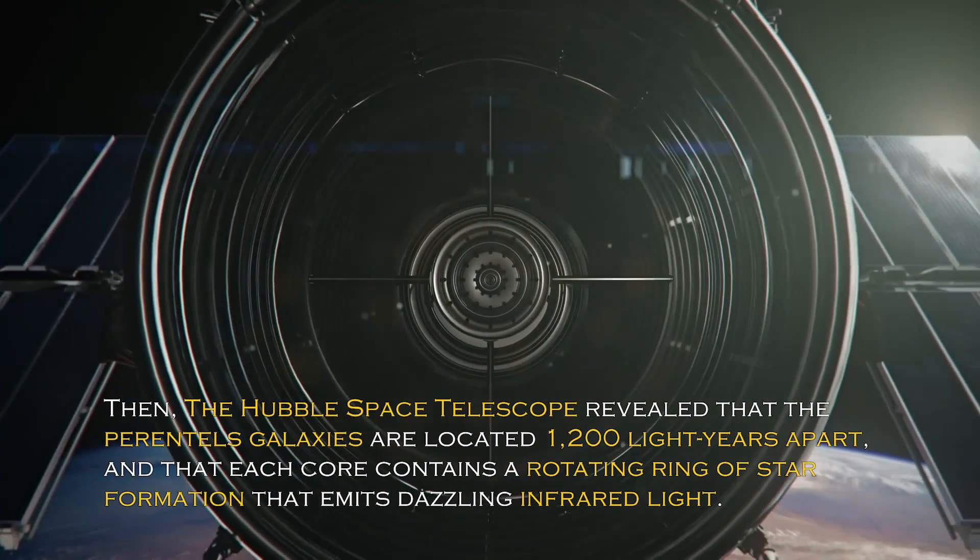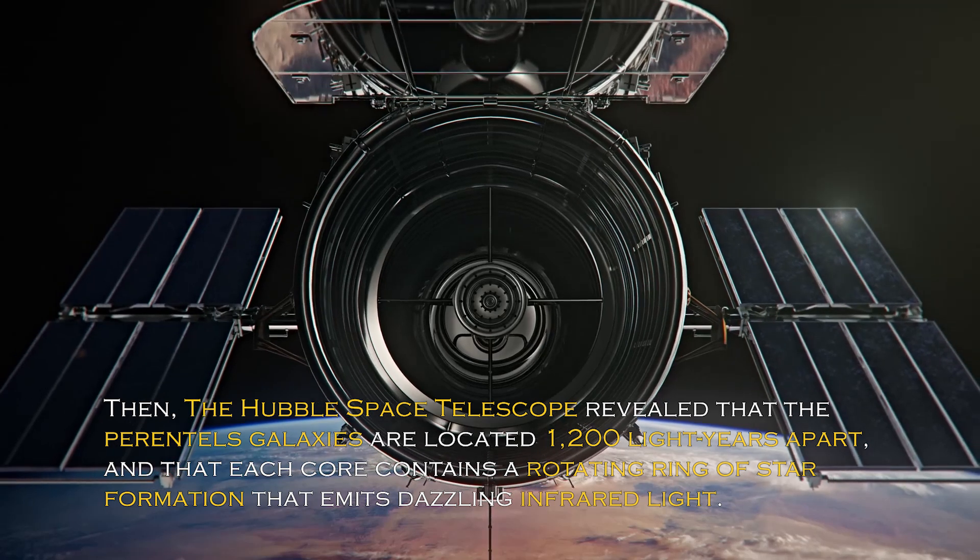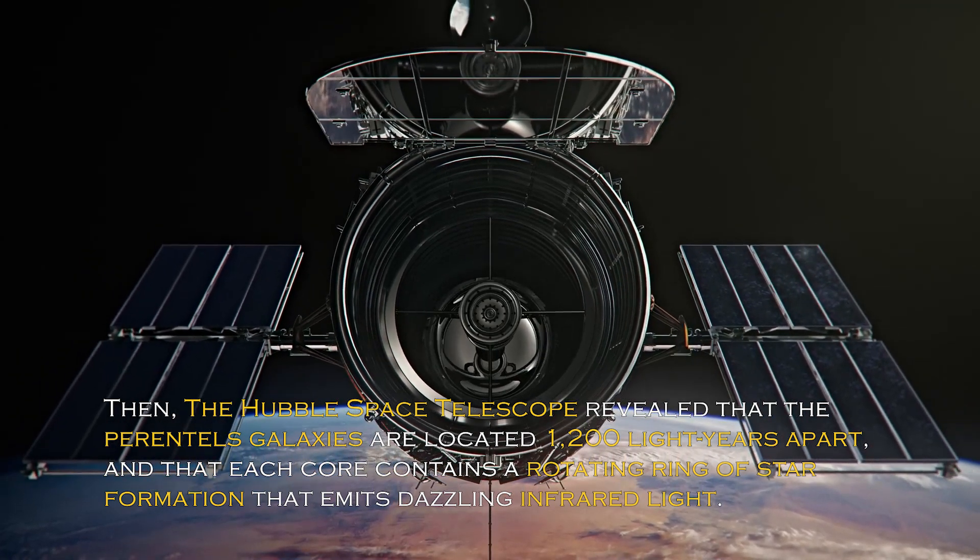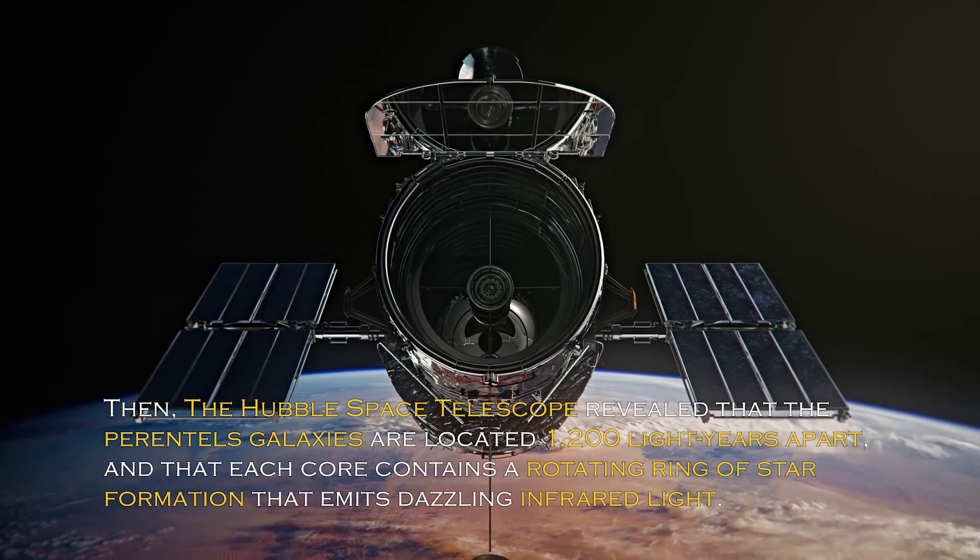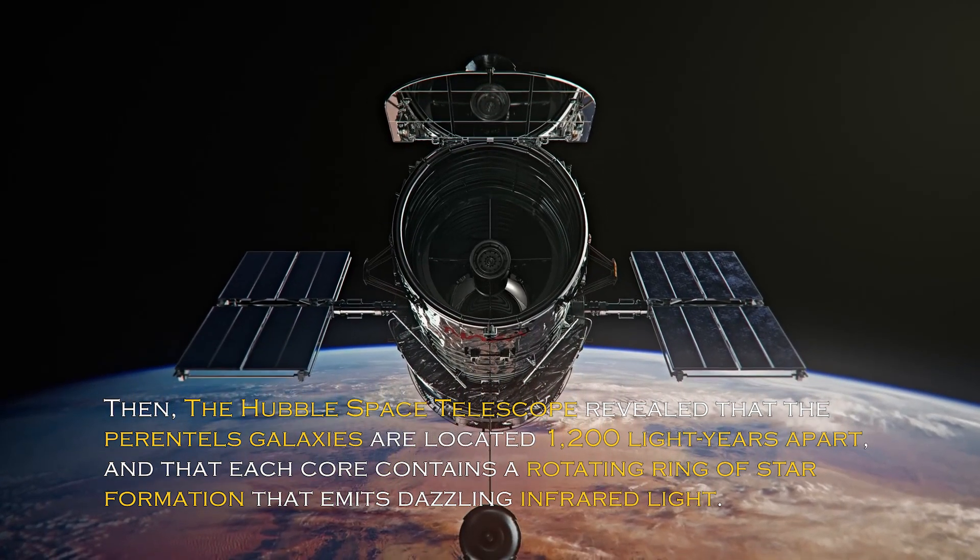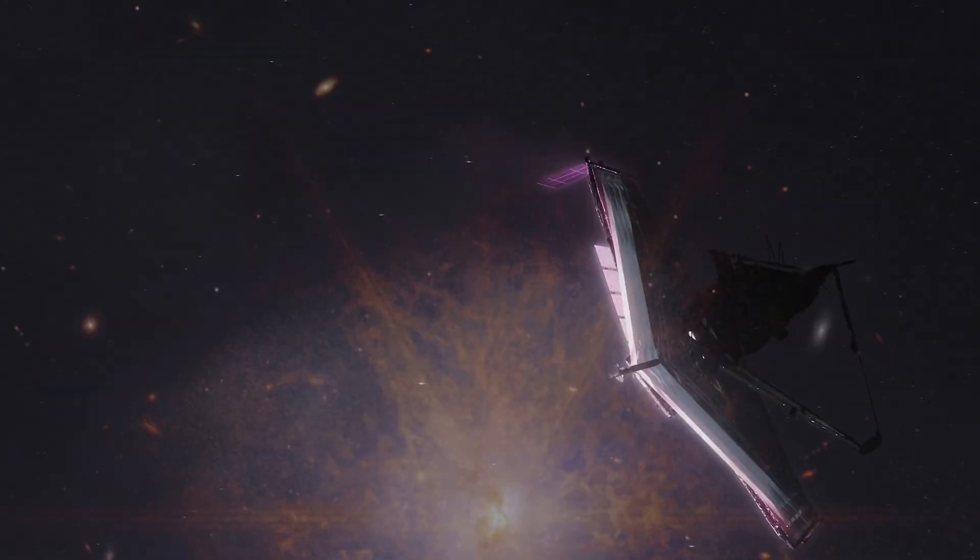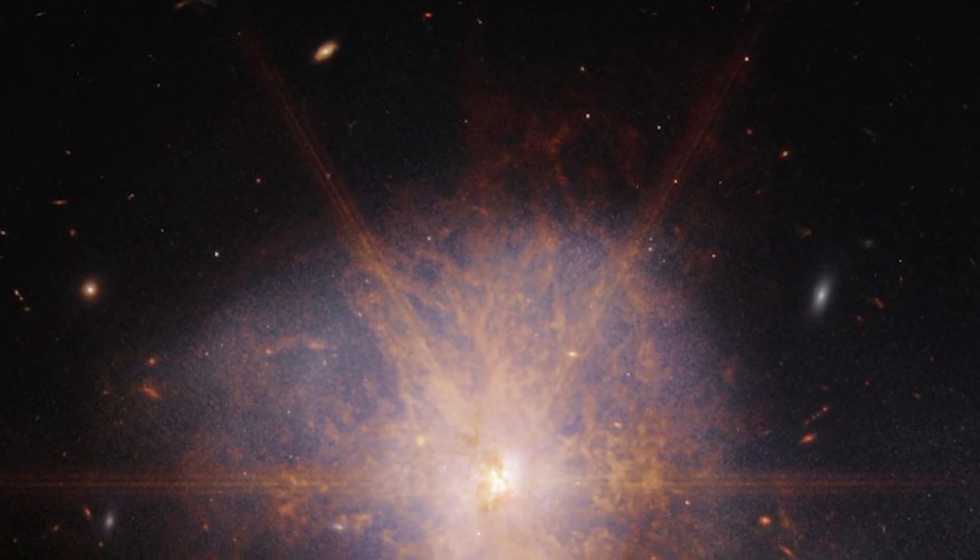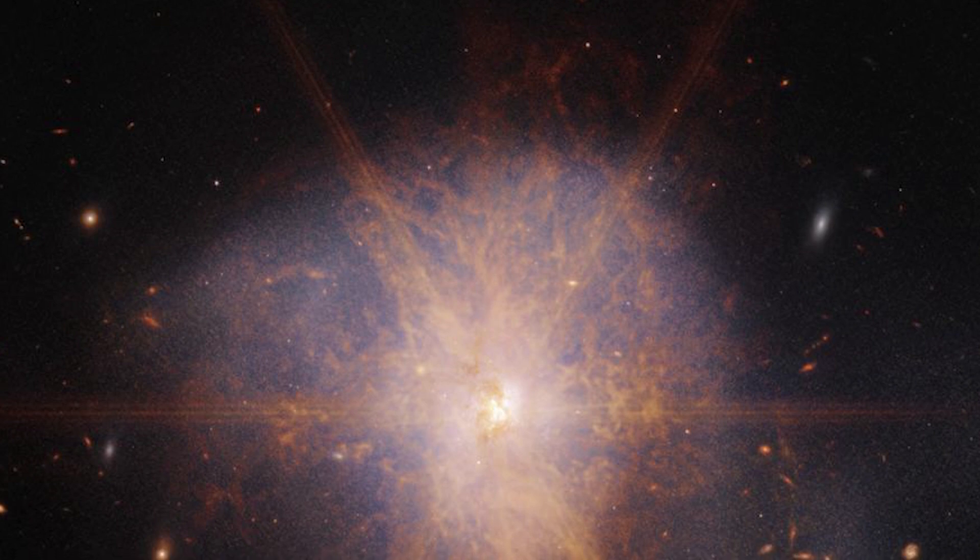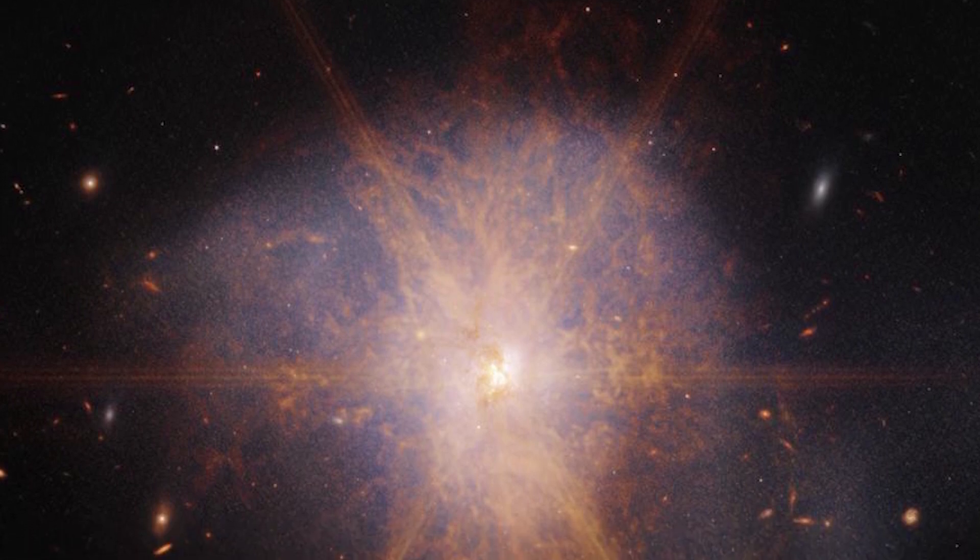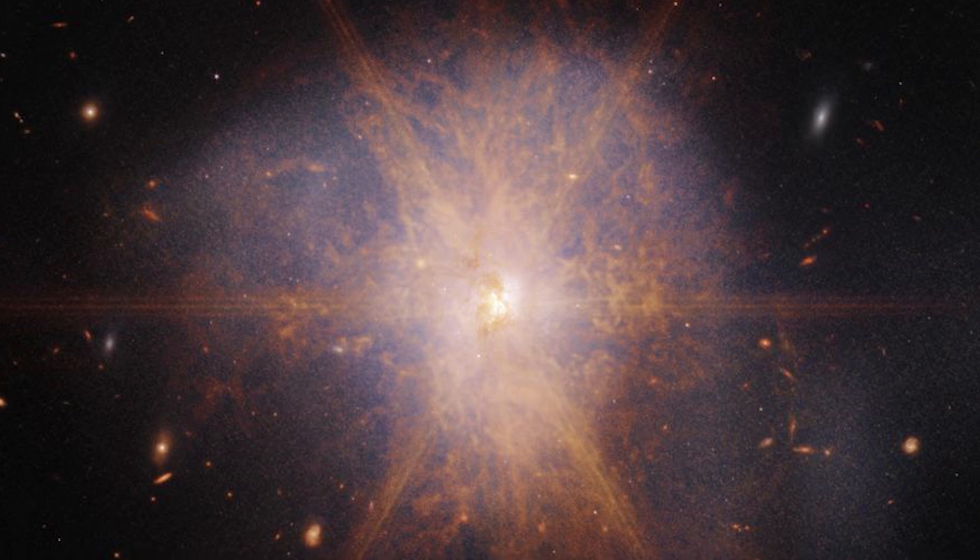The Hubble Space Telescope revealed that the parent galaxies are located 1,200 light-years apart, and that each core contains a rotating ring of star formation that emits dazzling infrared light. The latest views from the James Webb Space Telescope show an impressive galactic merger of the two galaxies. This image also shows faint tidal tails extending from the outskirts of the merger, indicating the gravitational pull between the two galaxies.